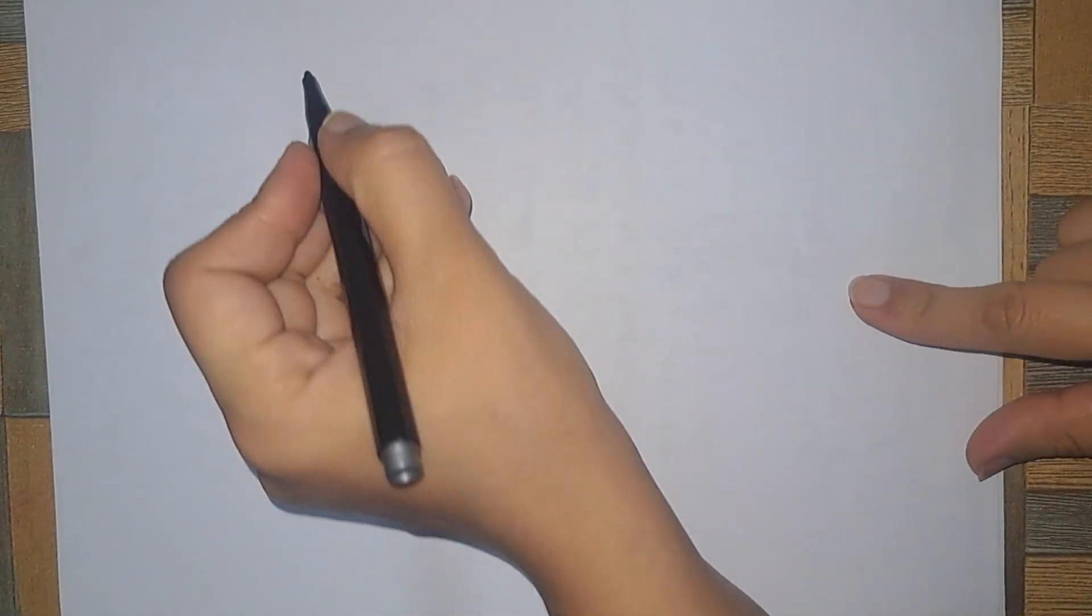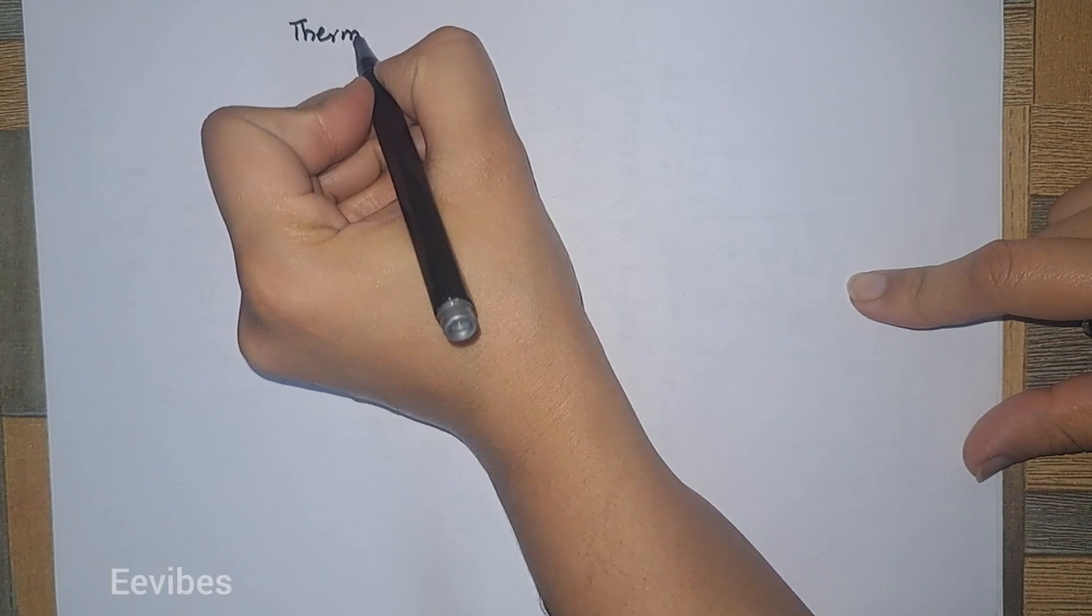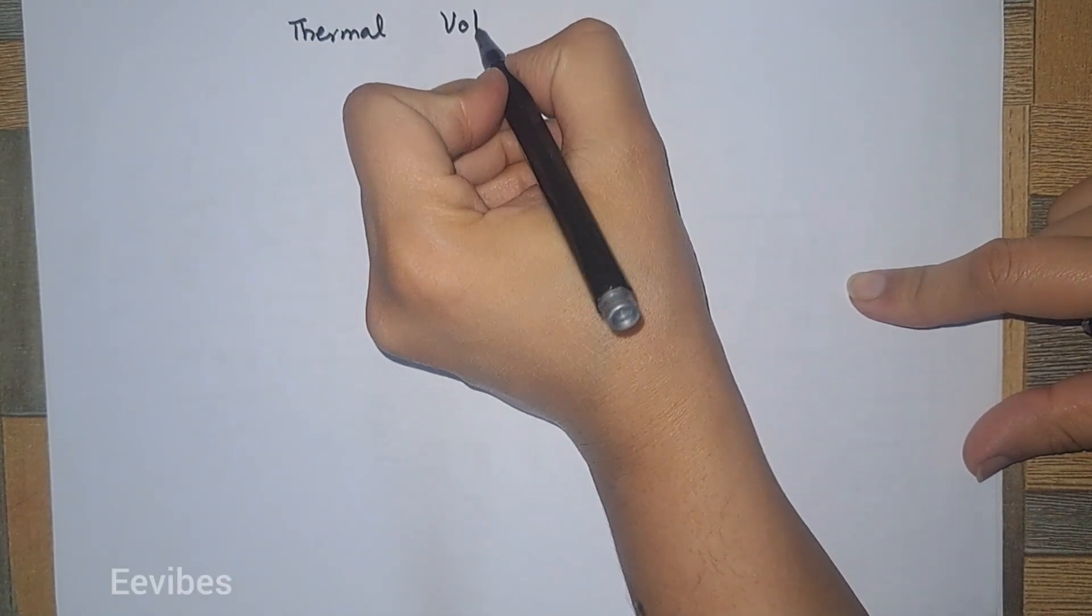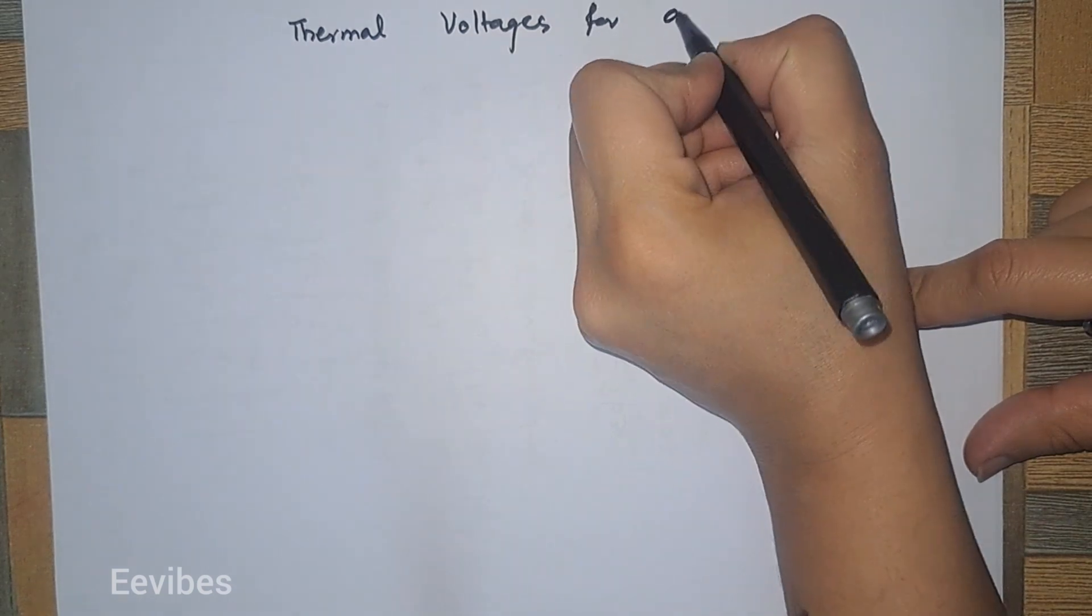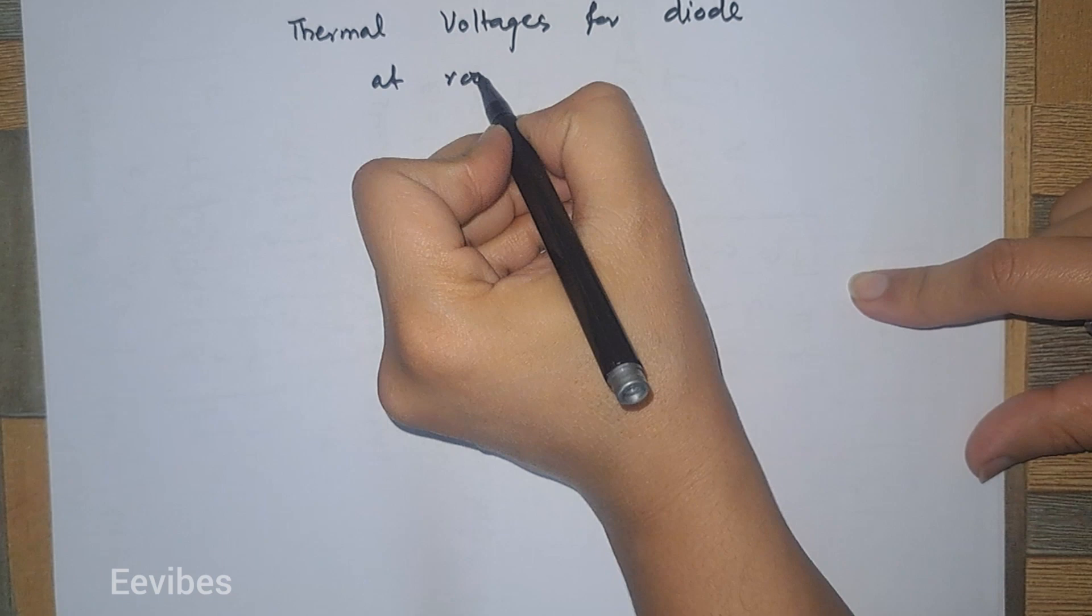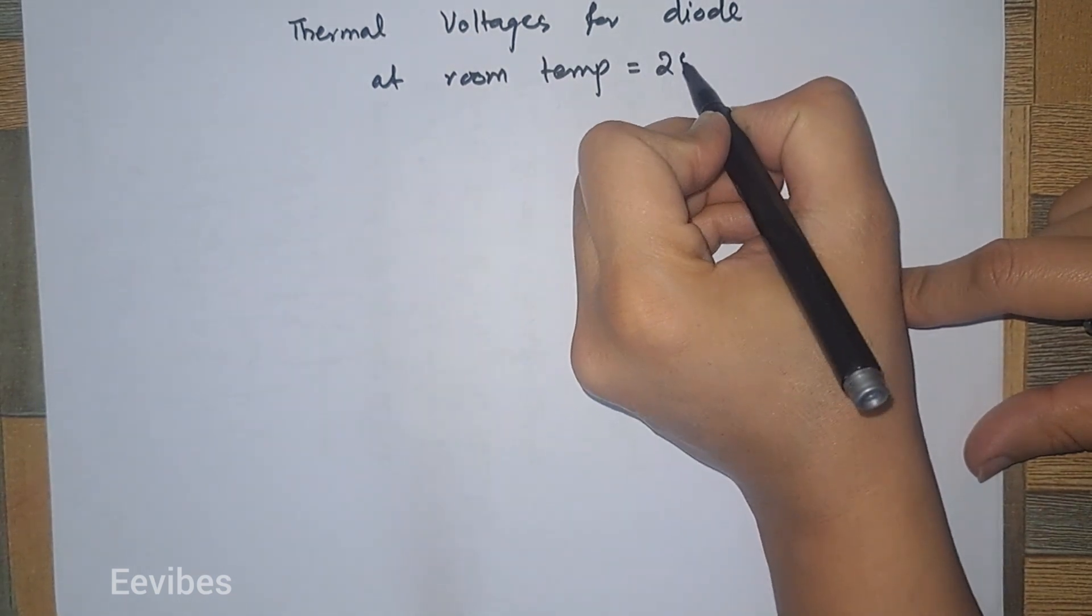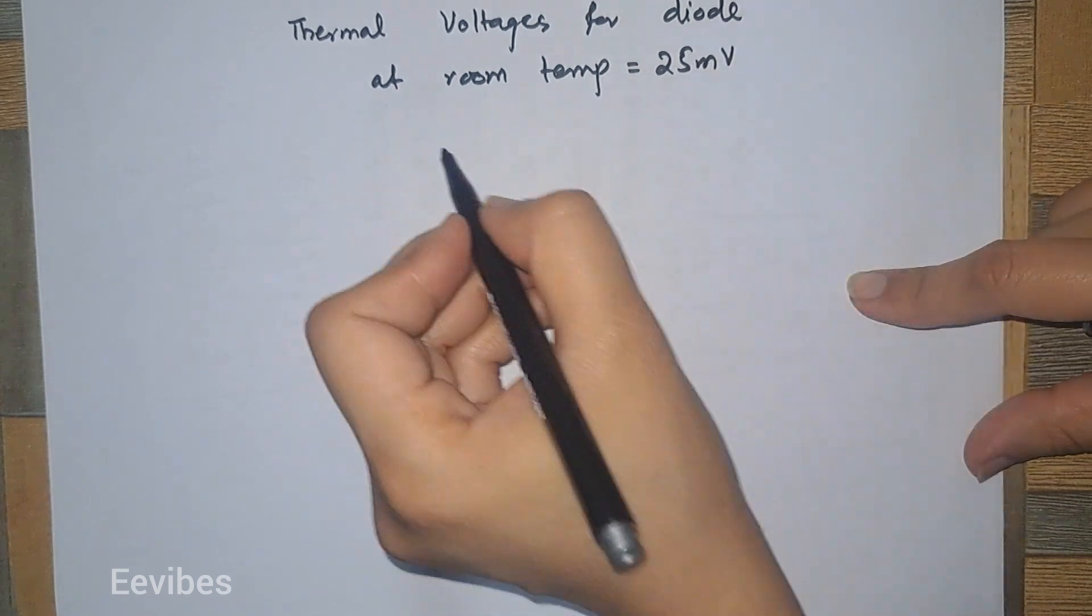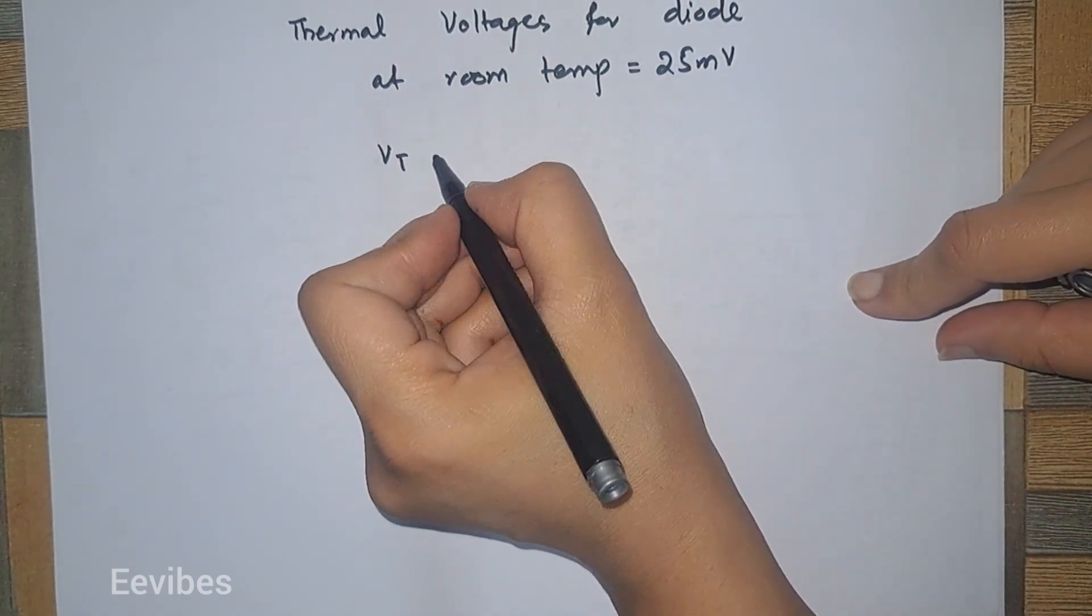Hi everyone, so here I will derive the value of the thermal voltage at room temperature for the diode. The thermal voltage for a diode at room temperature is equal to 25 millivolts. How does that come about? We know that the formula for the value of the thermal voltage